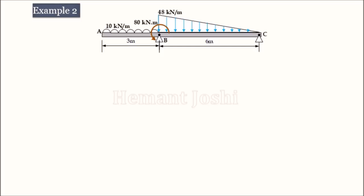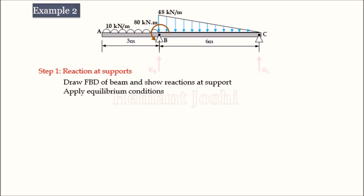Let us work through an example. Consider beam ABC where AB is the overhanging portion, B and C are supported. It carries a UDL of 10 kN/m, a couple of 80 kN·m, and a uniformly varying load. The first part is to find reactions by drawing the FBD, showing reactions RB and RC. Since there is no horizontal load, there is no horizontal reaction — and even if present, horizontal forces are axial effects not considered in SFD and BMD.